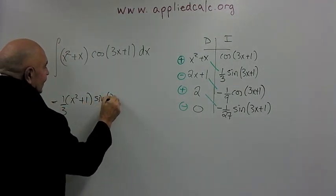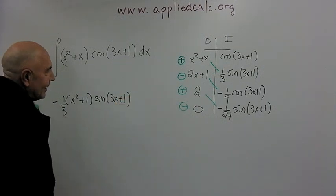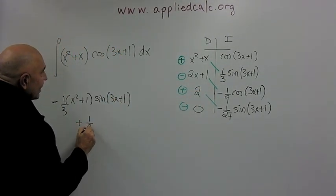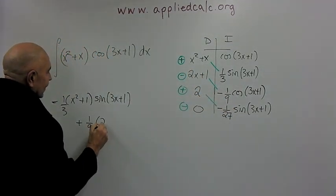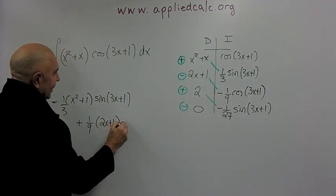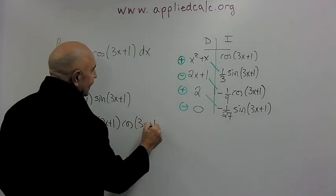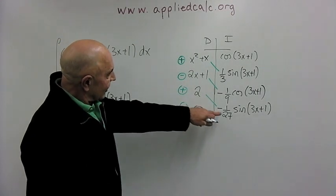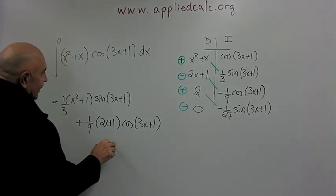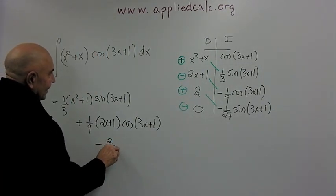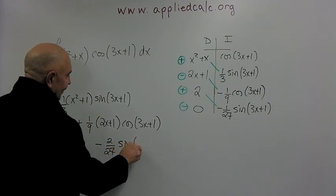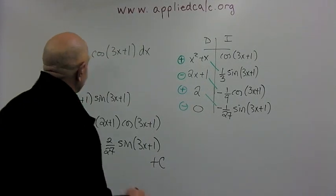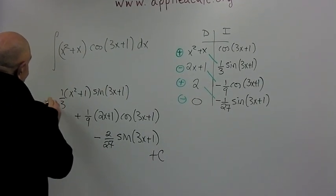cosine of 3x plus 1, minus times the minus gives you a plus. So we'll have plus one-ninth of this product, 2x plus 1, times cosine of 3x plus 1. And finally, plus one-ninth of this product, plus two times that, which is again, minus 2 over 27, times sine of 3x plus 1. And then we end it all up with plus big C, and that is the integral.